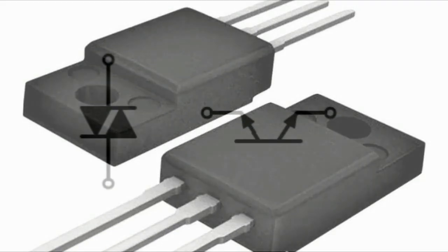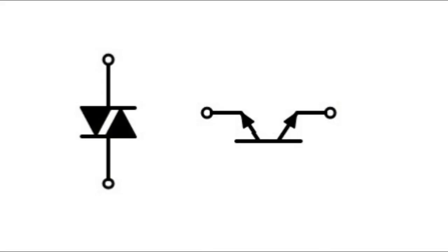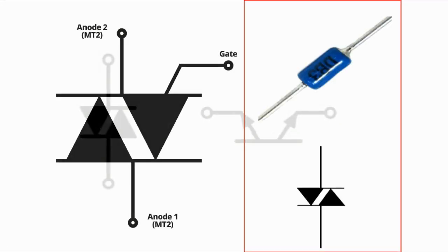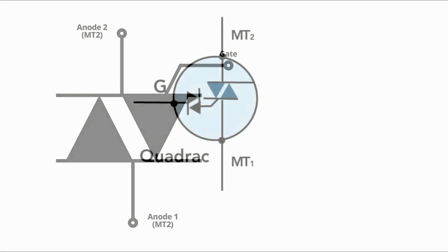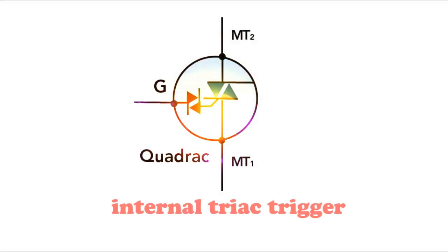Quadrac is basically a combination of diac and triac forming a single chip. This part is also called internal triac trigger.